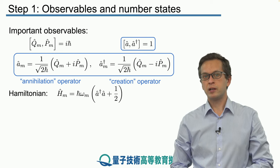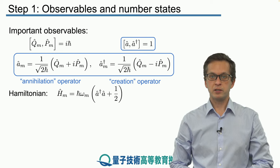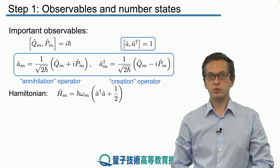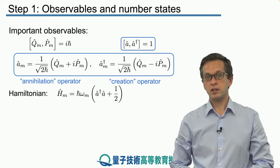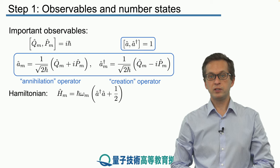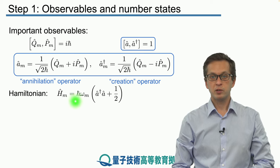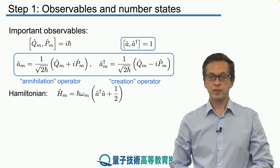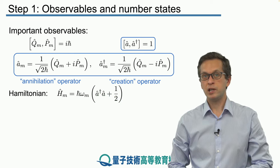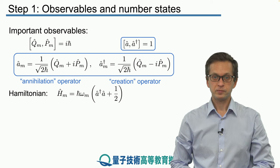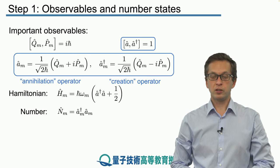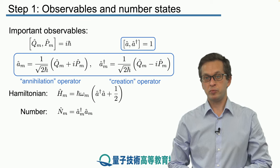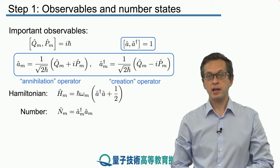We have seen other observable operators of vital importance, such as the Hamiltonian, which tells us the energy in a single mode of an electromagnetic field: Hₘ = ℏωₘ(A†A + 1/2). This m labels the mode. Corresponding to the number of excitations in the field is the number operator, simply given by N̂ = A†A.